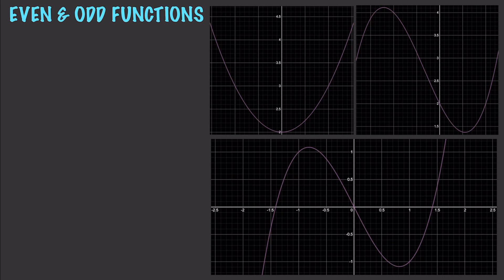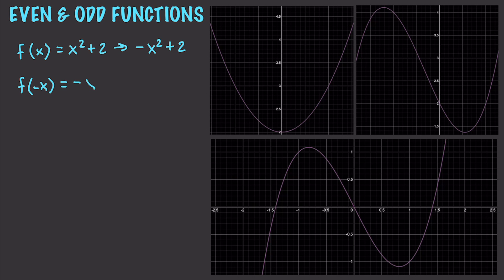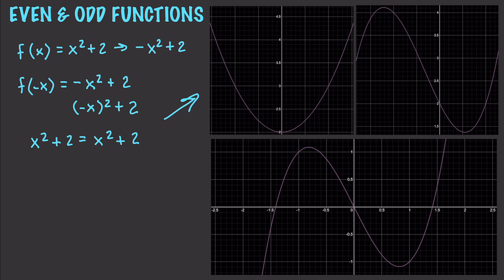This brings us to functions that are even, odd, or neither. Even functions are symmetric about the y-axis. For example, f(x) = x squared plus 2: if we evaluate f(negative x), we get negative x squared plus 2, which equals x squared plus 2 — because a negative squared is always positive. So this is an example of an even function.